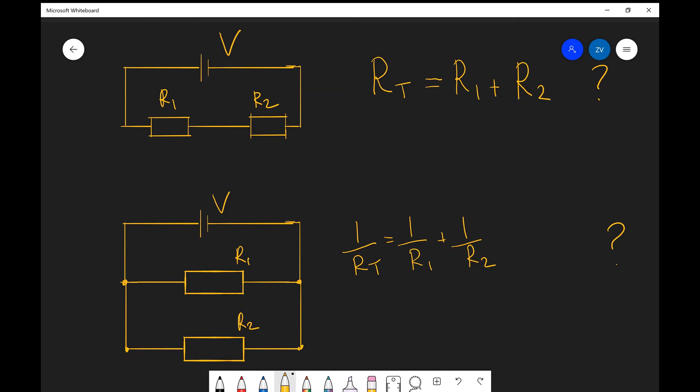The trick with these derivations is to always think what is actually being added up. Now remember this is a series circuit, and in a series circuit the current remains constant but the potential difference is shared or added between the two resistors.